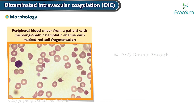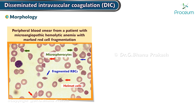Here is a histopathological peripheral blood smear from a patient with microangiopathic hemolytic anemia with marked red cell fragmentation. The smear shows multiple helmet cells and other fragmented red cells. Microspherocytes are also seen. The platelet count is reduced.